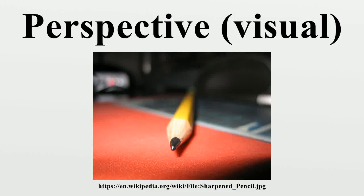Perspective, in the context of vision and visual perception, is the way in which objects appear to the eye based on their spatial attributes, or their dimensions and the position of the eye relative to the objects. There are two main meanings of the term: linear perspective and aerial perspective.